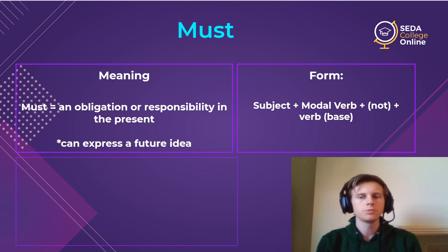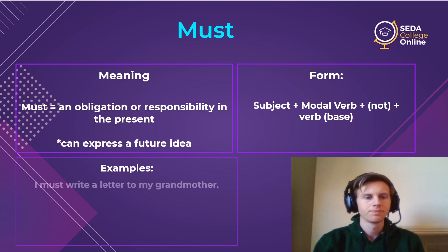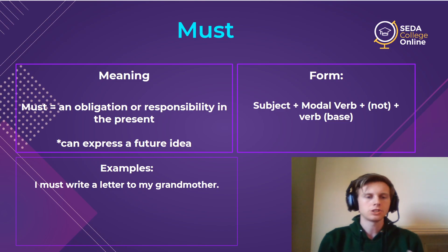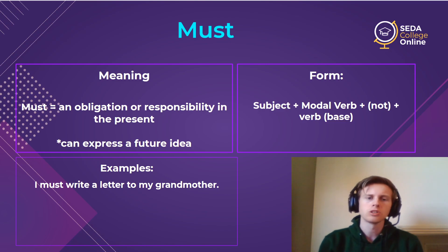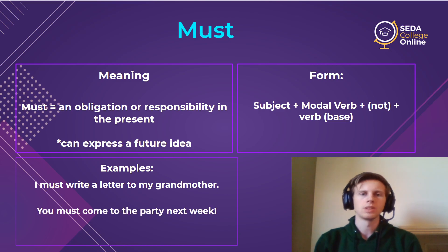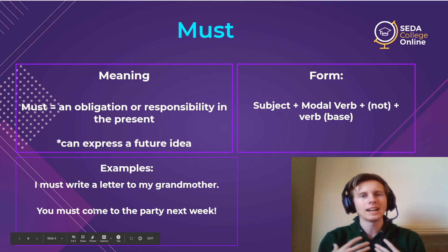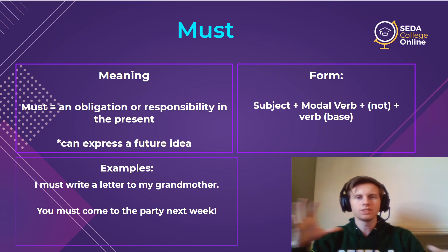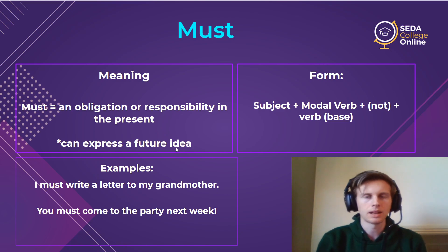Must is the modal verb for responsibility or obligation in the present. It is only a present tense word — it does not change for future or past. Sometimes you can express a future idea with this modal verb, and I'll show an example of that in a moment. The form is very simple: subject, modal verb, and then the verb in the base form. If the sentence is negative, you put 'not' after the modal verb. So just three parts: subject, modal verb, base form verb.